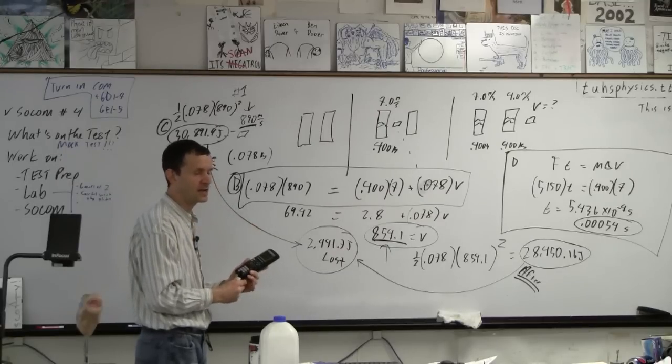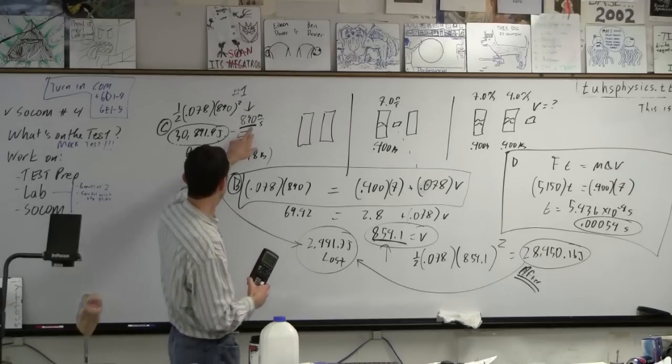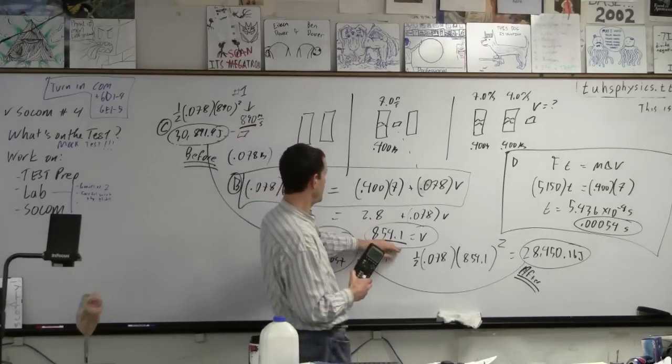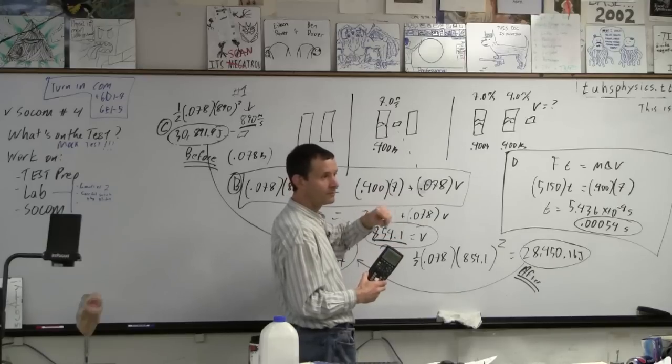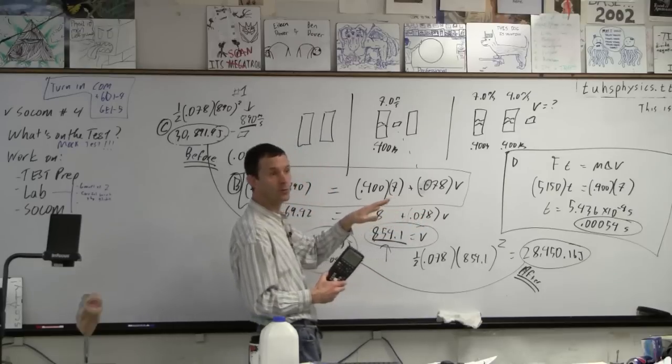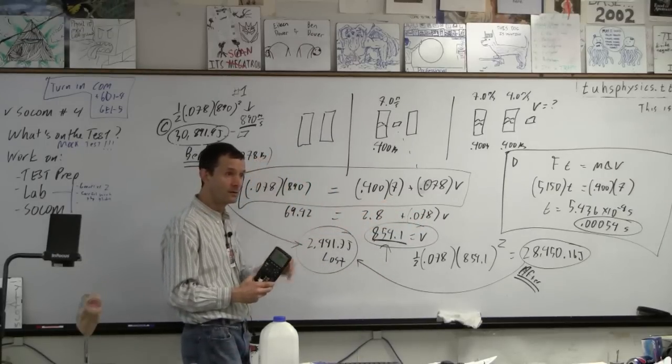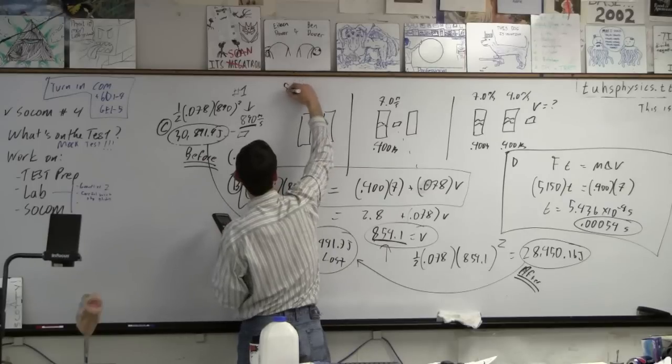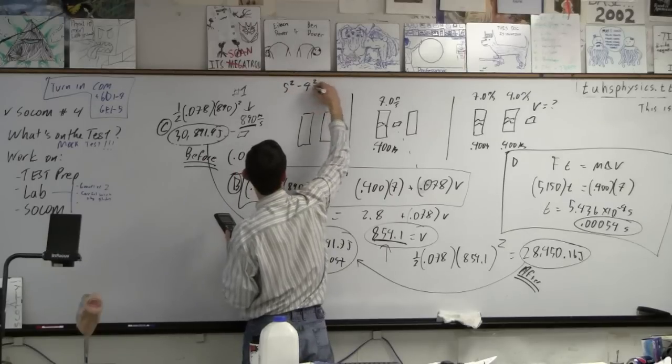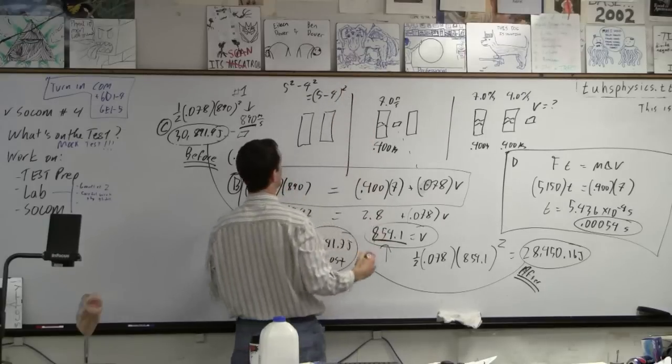I mean, just supposing that the test actually asks, what's the change in kinetic energy? Resist the urge to do 890 minus 854.1 and go 1 half m change in velocity squared. That doesn't work, does it? Right? Do you remember why that doesn't work? Why? It's the same reason. You can't go 9 minus 5 squared minus 4 squared does not equal 5 minus 4 squared, right? Isn't that right?